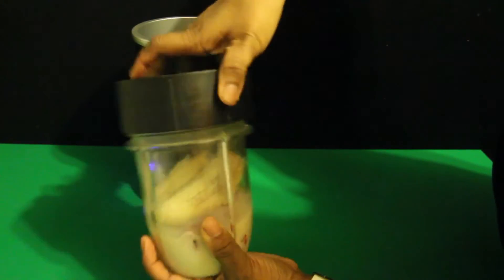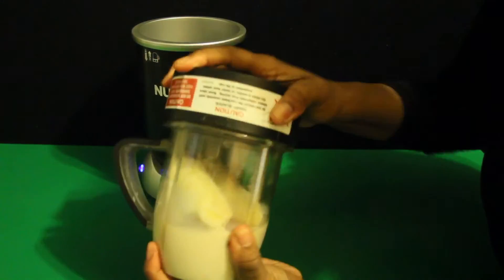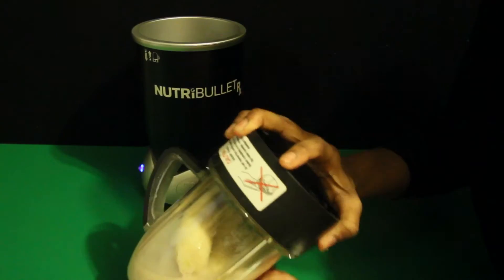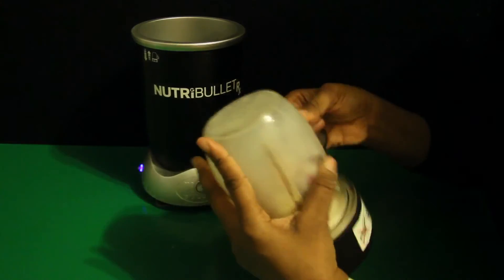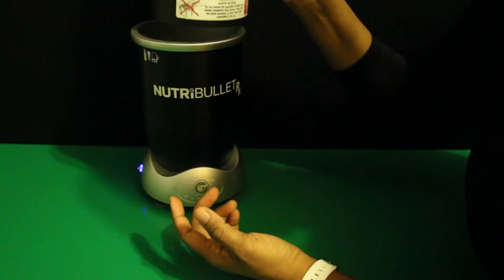But you can use whatever you have, whether it's the regular Nutribullet or the Vitamix or Ninja, as long as it's capable of chopping into the frozen strawberries. I'm going to put this on the base until it stops.